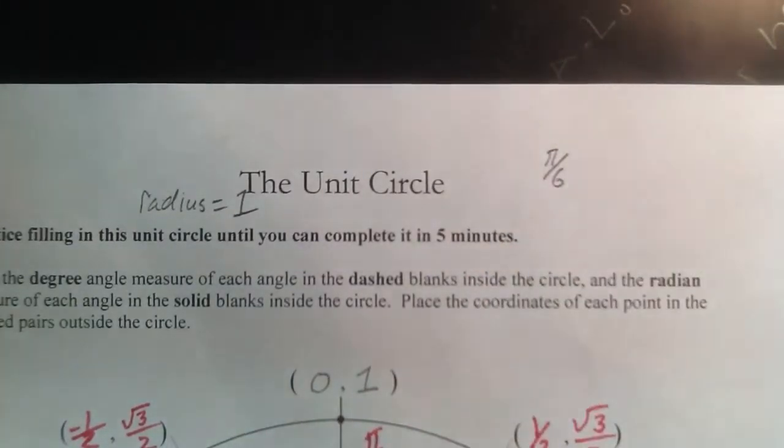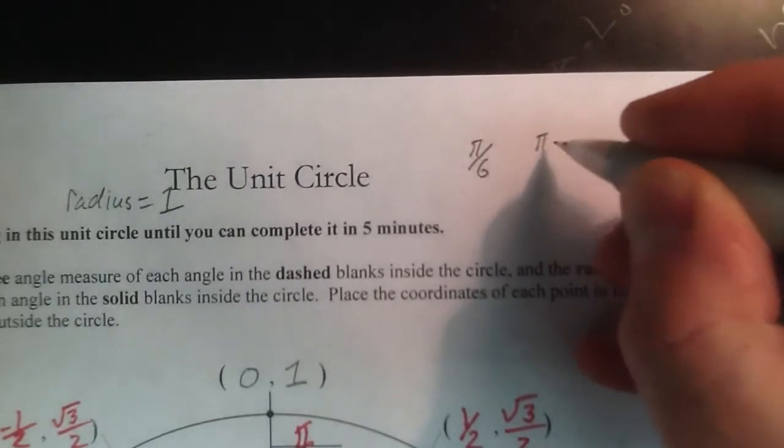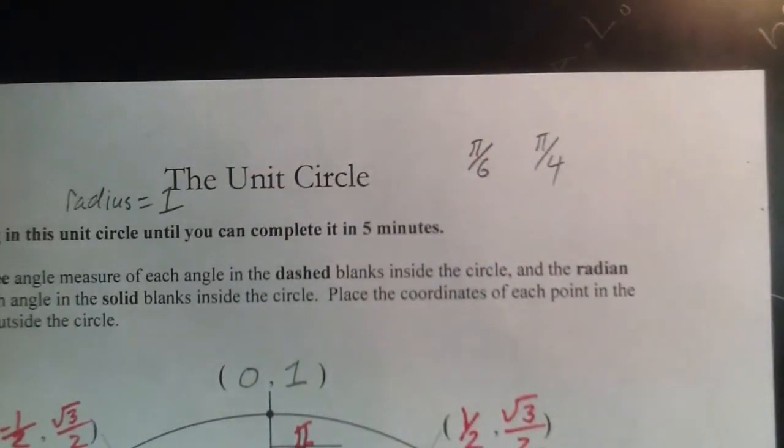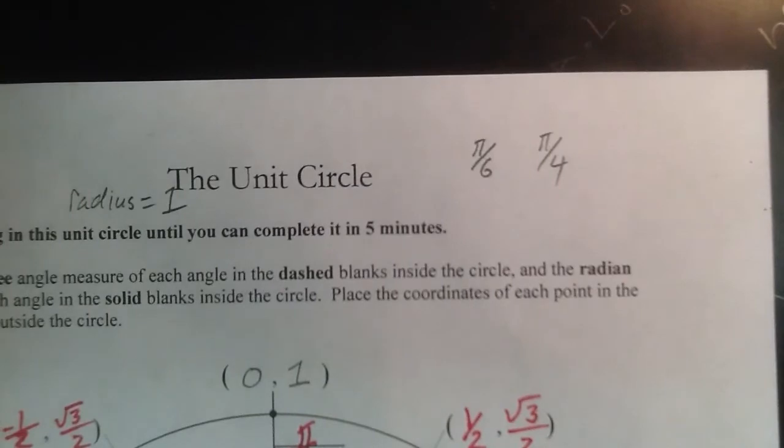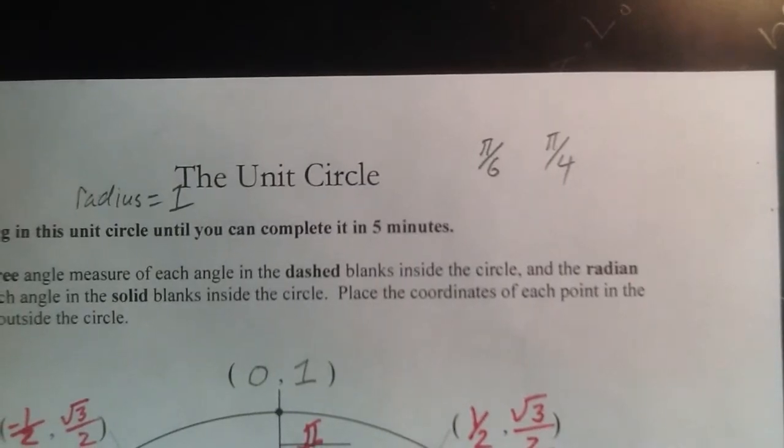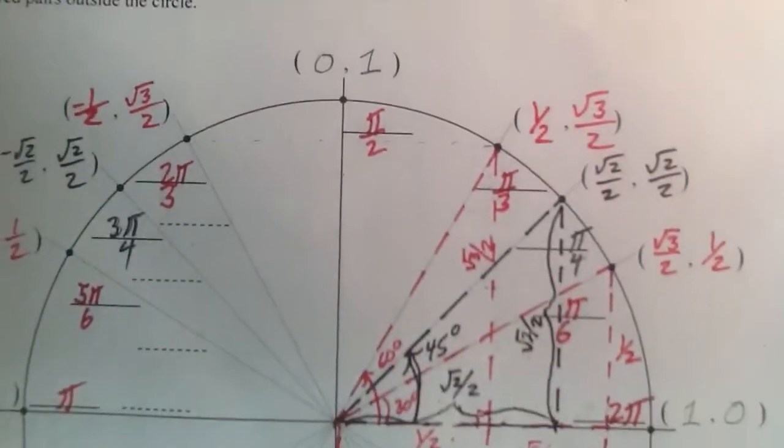One is π over 6, the other one is π over 4. Because the entire unit circle is made up of multiples of π over 6 or π over 4.